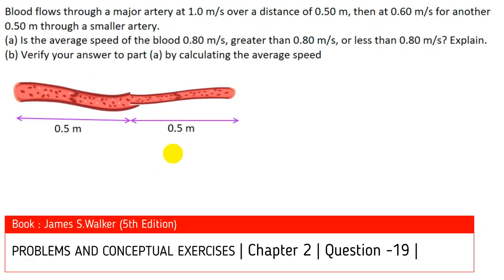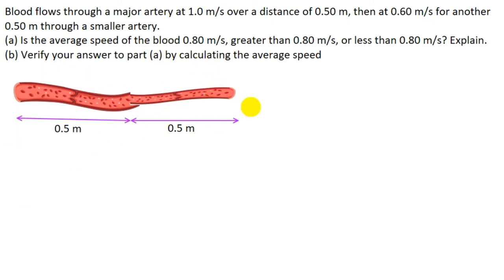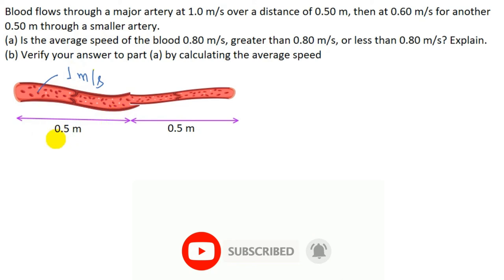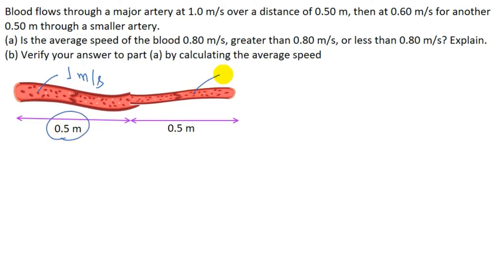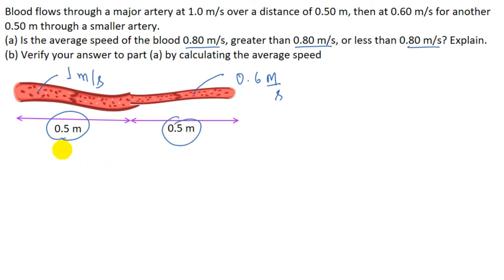In this question, blood flows through a major artery at 1.0 meter per second over a distance of 0.5 meters, and through a smaller artery at 0.6 meters per second over a distance of 0.5 meters. We have to determine whether the average speed equals, is greater than, or is less than 0.8 meters per second. The distance interval is the same in both arteries at 0.5 meters.